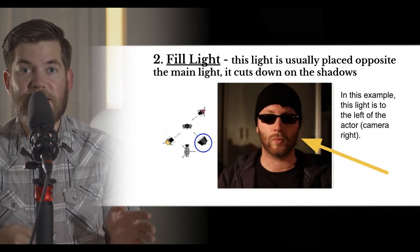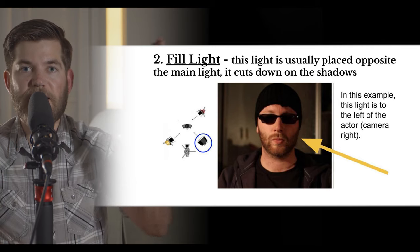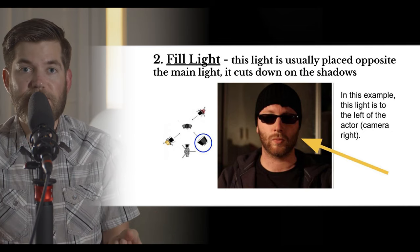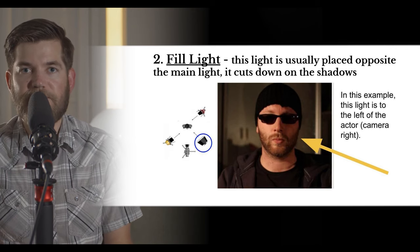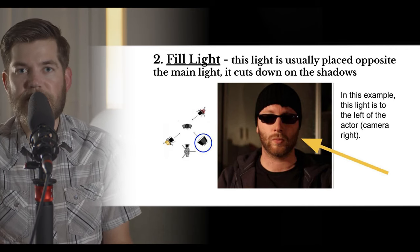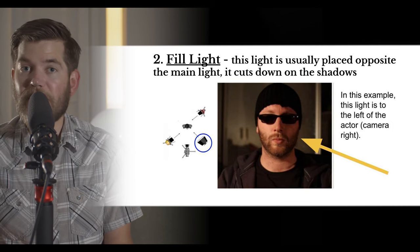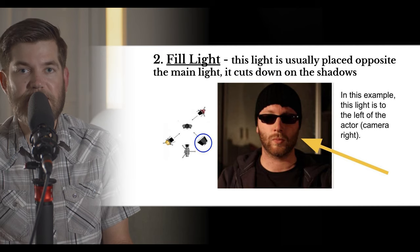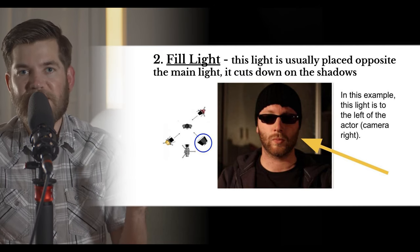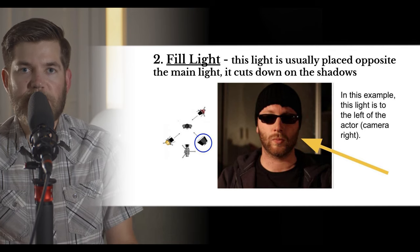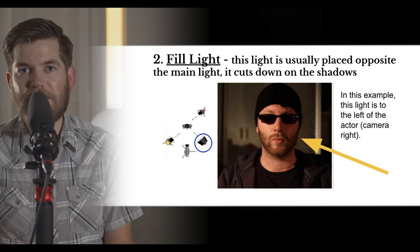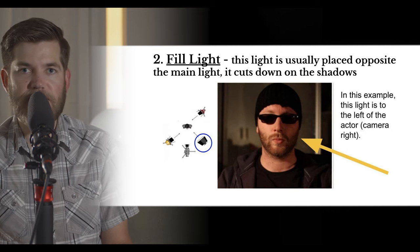Next is the fill light, usually placed opposite of the key light. Adding the fill light lifts the shadows on the other side of the subject's face. However, you don't want the fill light to fill in all the shadows — just some, to raise those shadows slightly and cut down on contrast. You still want some contrast where one side is lighter, but not complete shadow all the time.